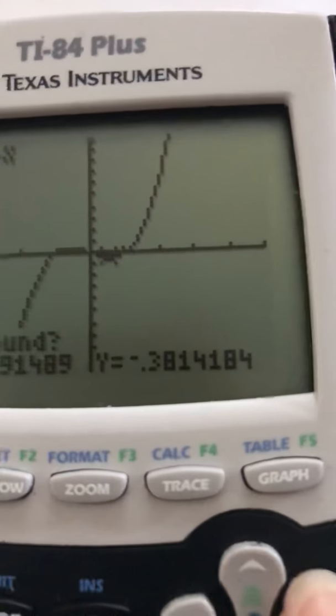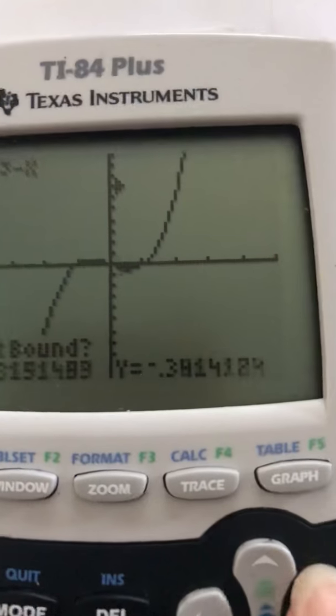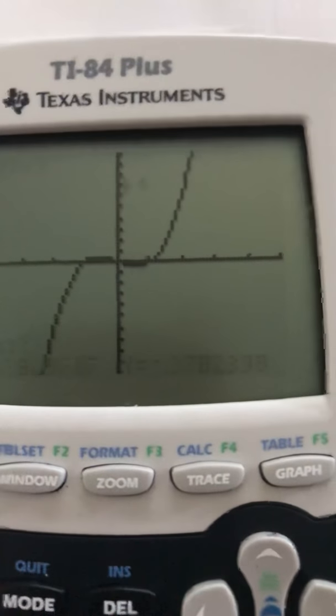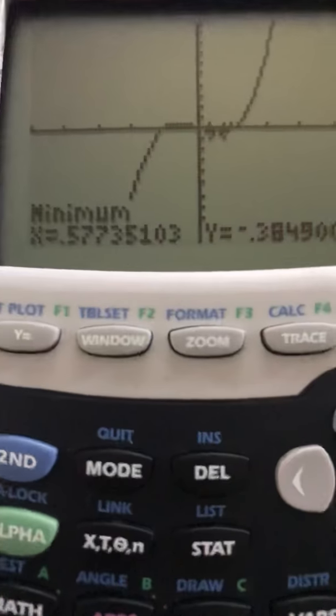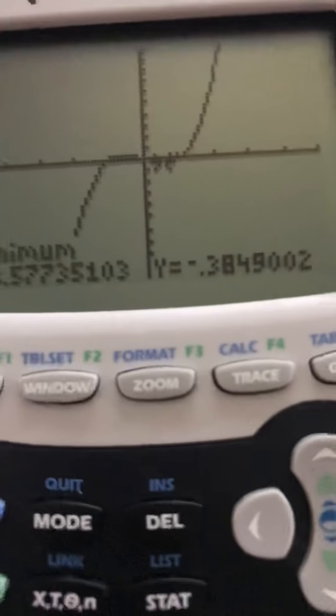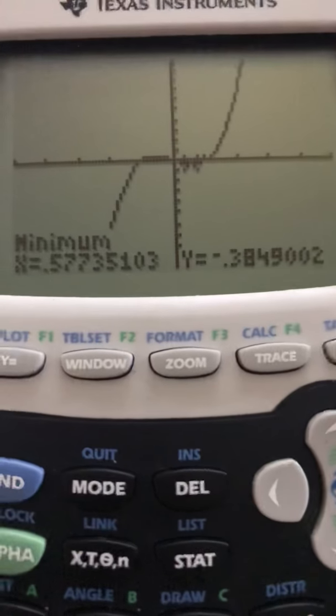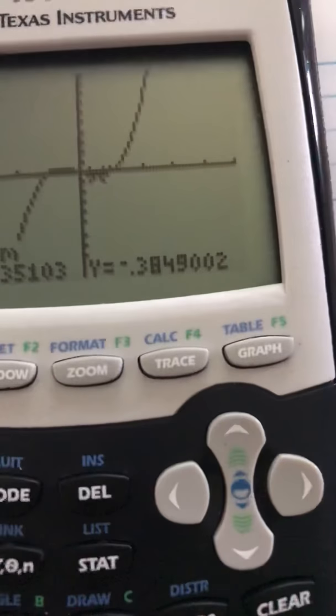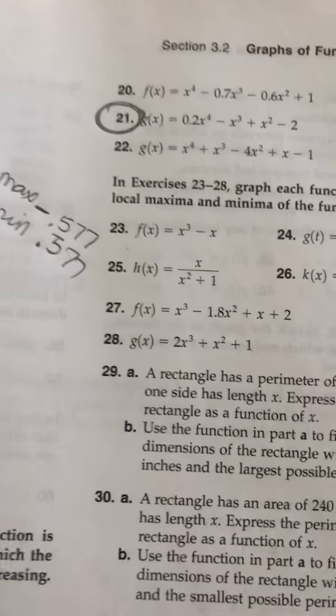Wait. Okay. So that went back up. So I'm going to go before. That's my left bound. Over. That's my right bound. And guess. Alright so my minimum is minimum is 5.577. Alright. And that was it for number 23.